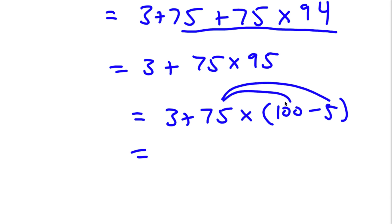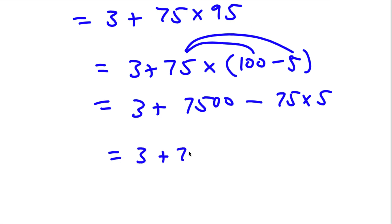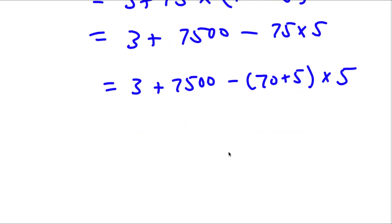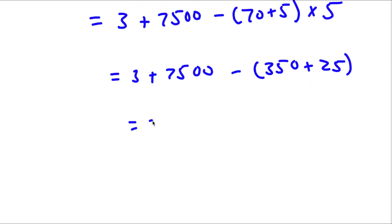Now I can distribute the 75: I get 3 plus 7500 — because 75 times 100 is 7500 — minus 75 times 5. Now 75 times 5 is the same as (70 + 5) times 5. Distributing the 5 gives 350 plus 25, so minus 375. This is equal to 3 plus 7500 minus 375.